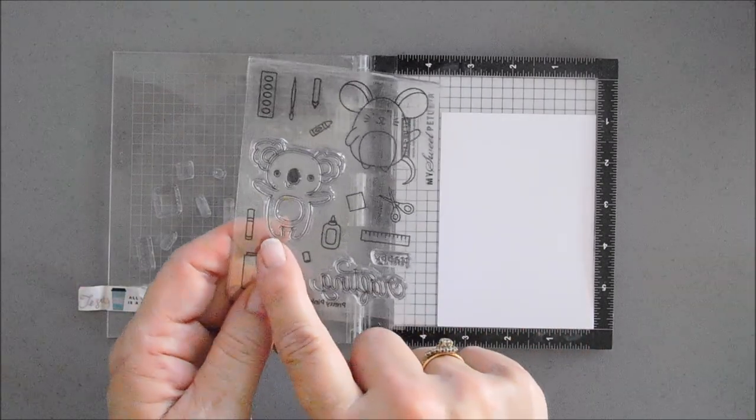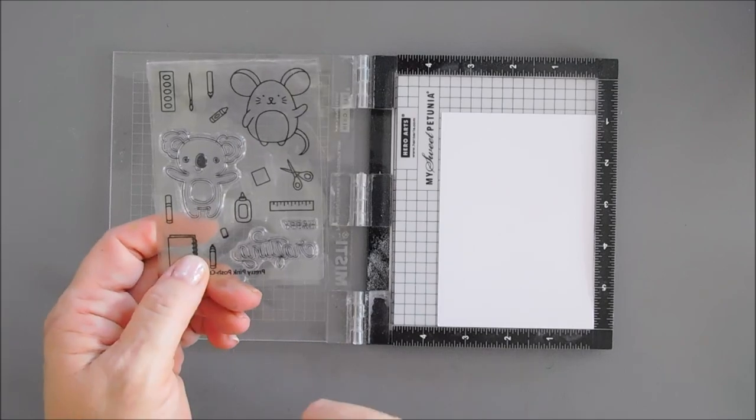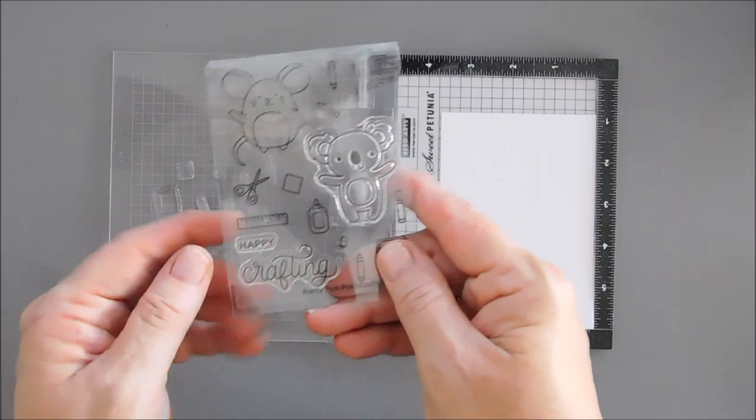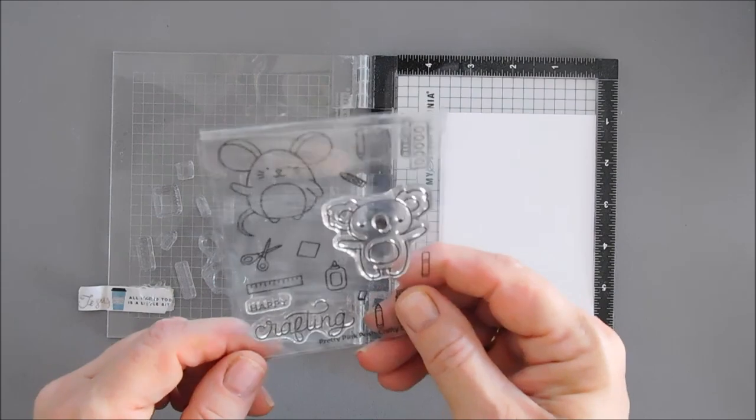The only one I'm not going to stamp is the koala, which I didn't call a panda, which is good. And I am going to stamp the sentiment, but we're going to use a different ink for that.